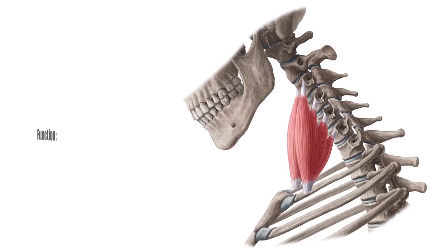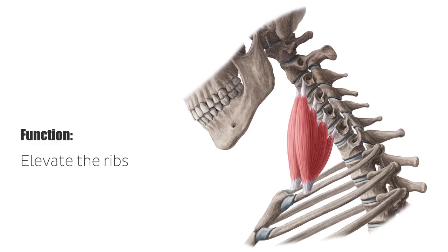The scalene muscles elevate the ribs and therefore the thorax. For that reason, they are also considered as accessory muscles of inspiration. A unilateral contraction bends the cervical spine to the side, known as lateral flexion. Furthermore, a bilateral contraction of the anterior scalene muscle causes bending of the cervical spine to the front, known as ventral flexion.